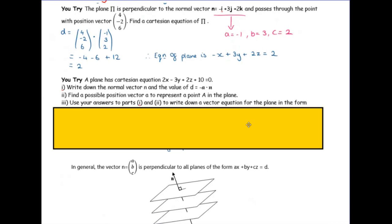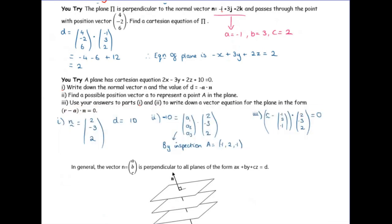The normal vector here is (−1, 3, 2). The next part is worded a bit oddly: given a plane equation, write down the normal vector and the value of d (which equals minus a dot n). We're working backwards to put it in r dot n = a dot n form: r = (x, y, z) dotted with (2, −3, ...) equals −10. So the normal vector is (2, −3, ...) and a dot n = −10, meaning d = 10. To find a possible position vector a, just pick numbers that satisfy a dot n = −10.